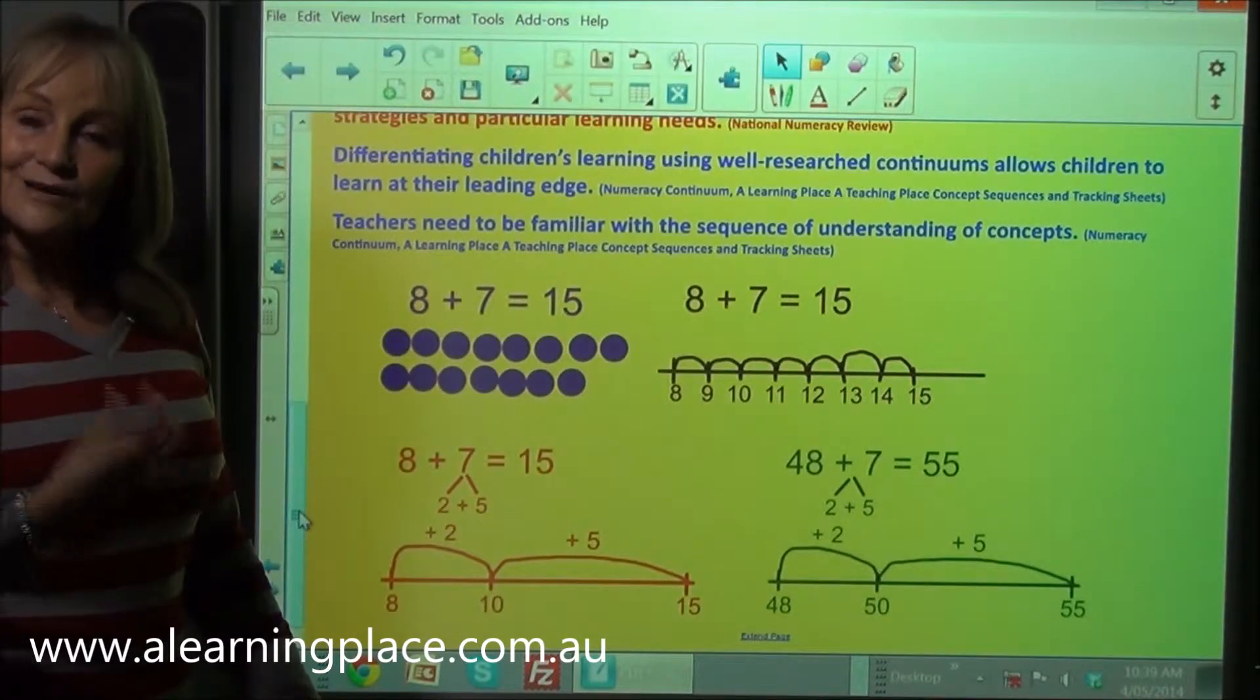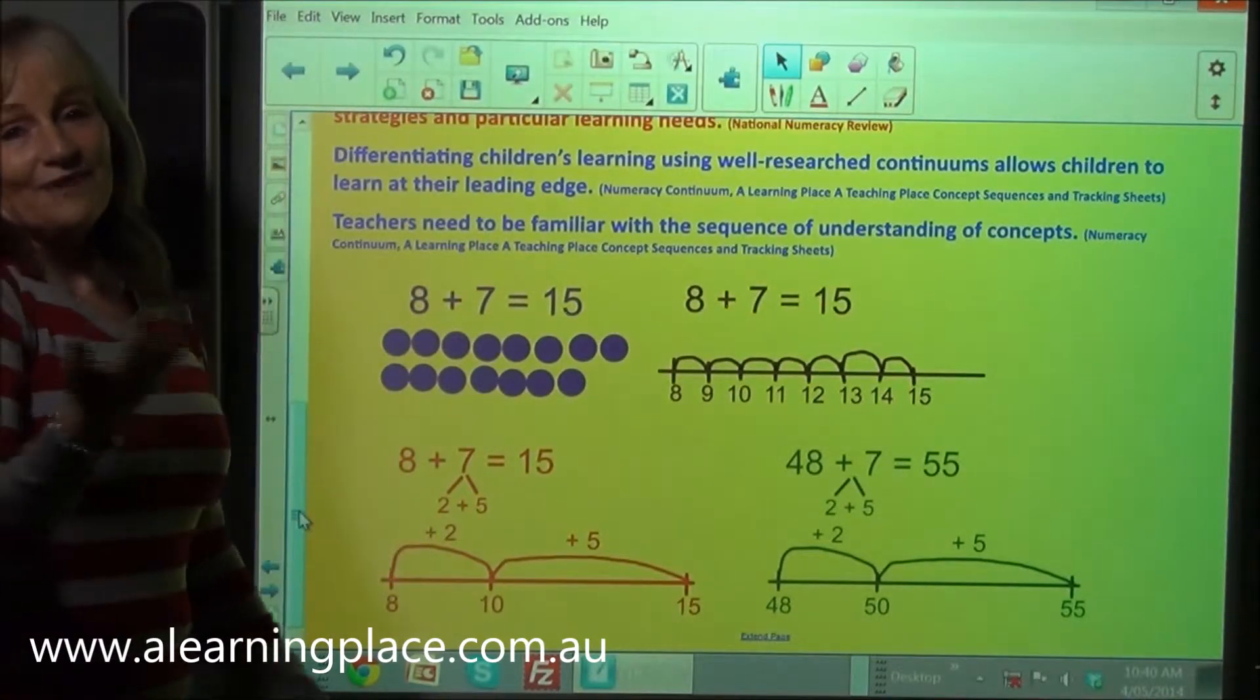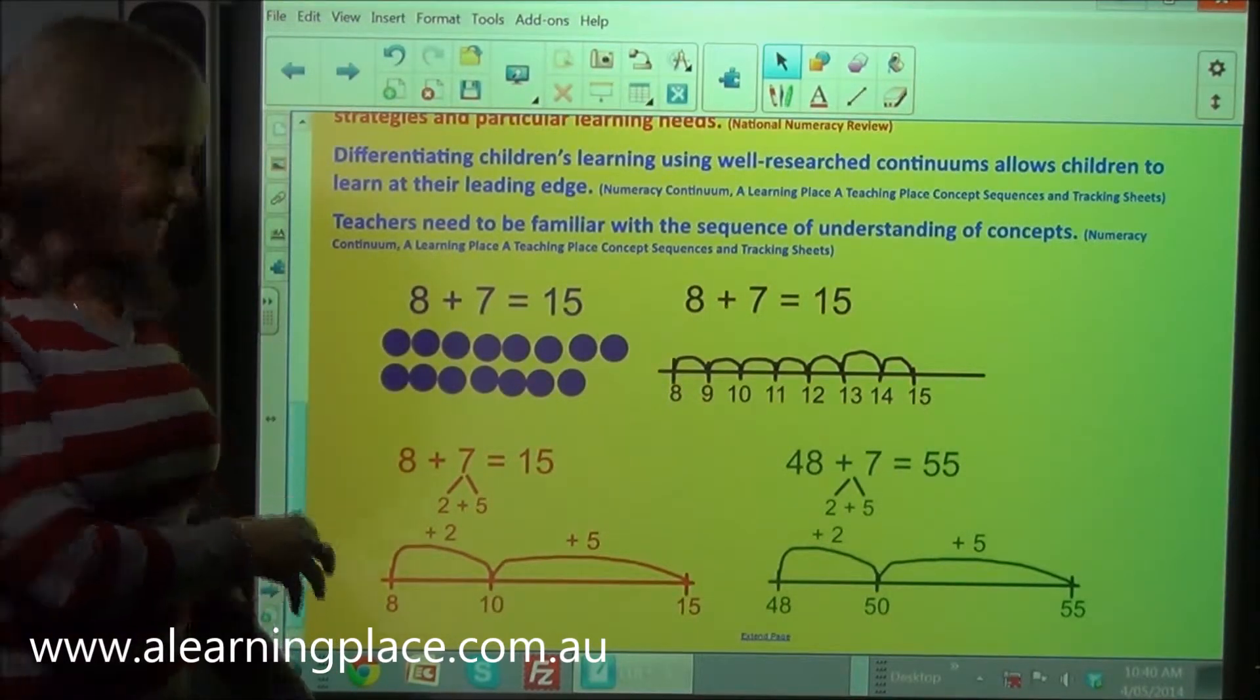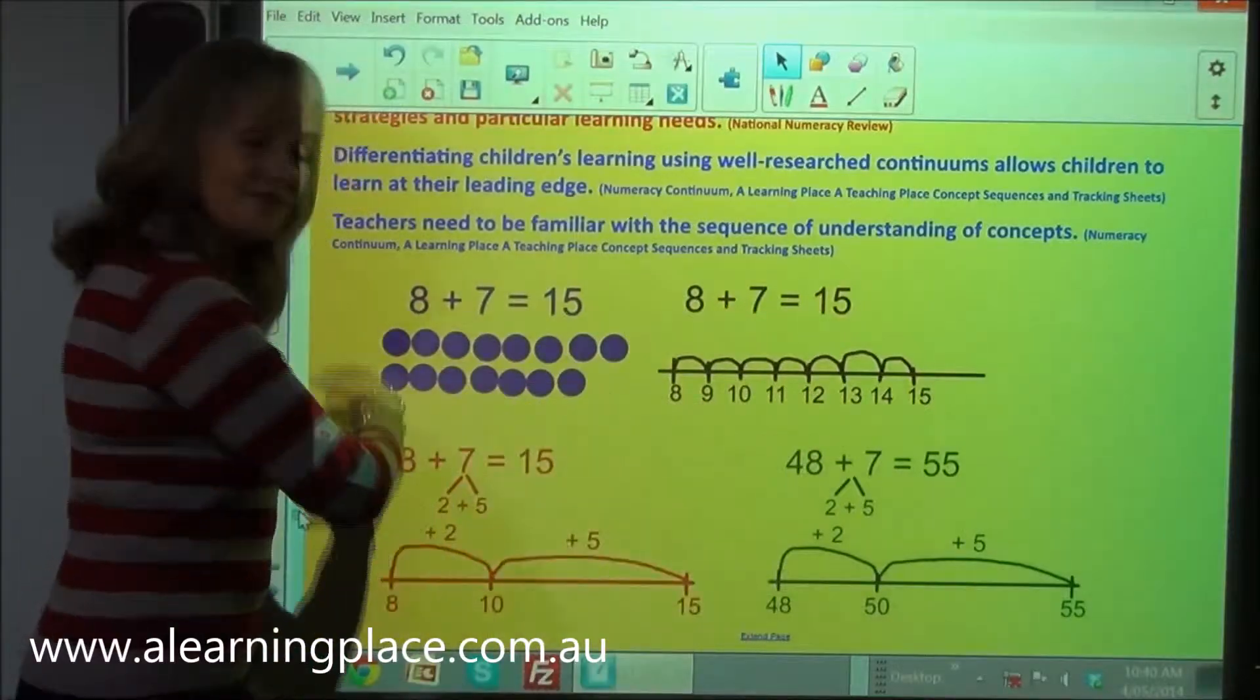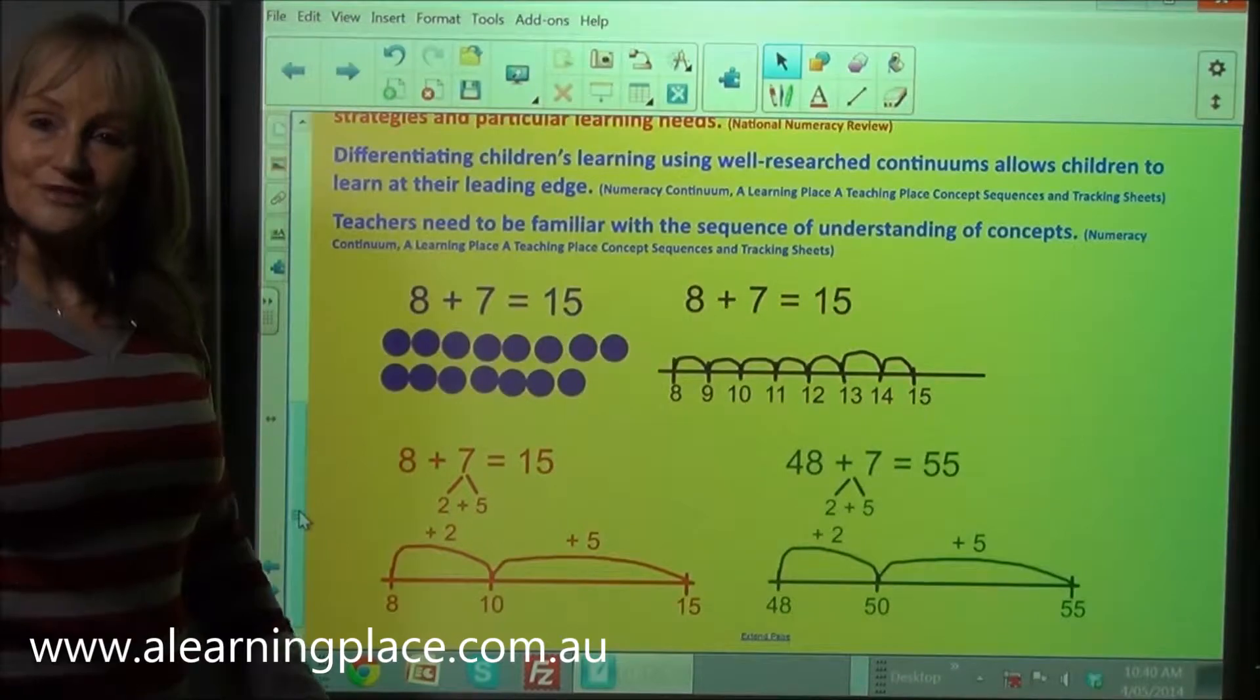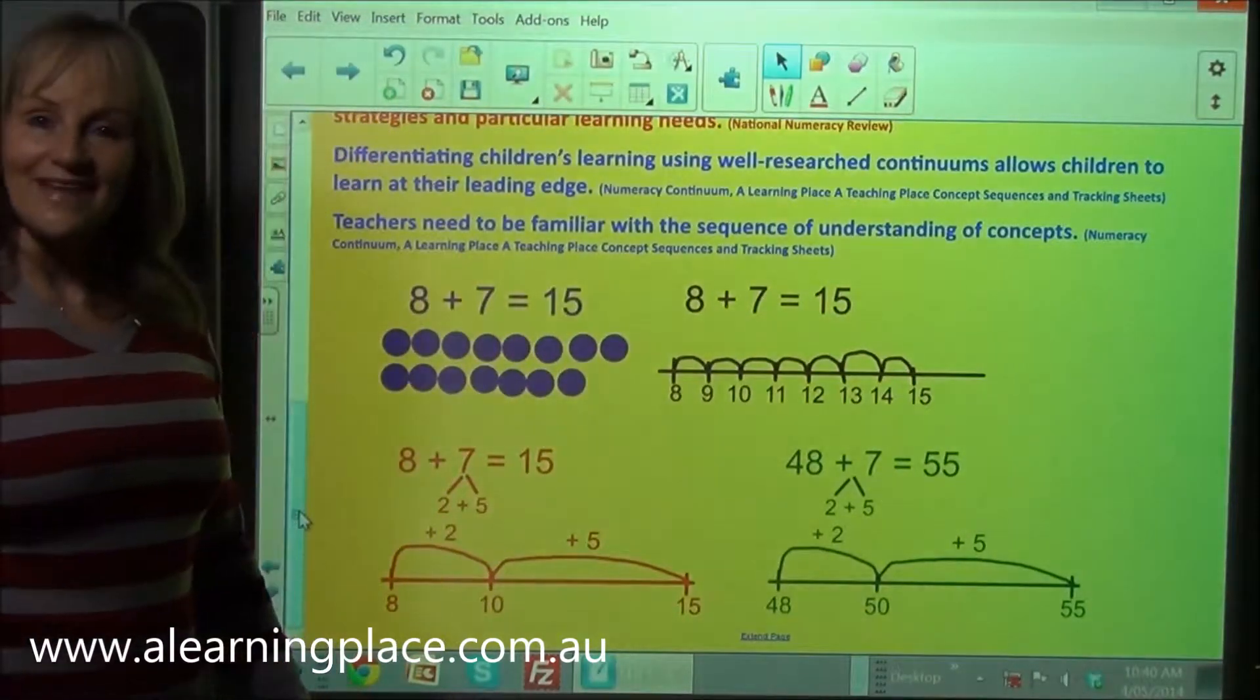Now if you have an interactive whiteboard like this it's really easy because you can just do the different levels in different colors. If you don't you can still do the different levels in different colors but unfortunately you're going to have to rub it off and redo it the next day. This way I can save this, put it up the next day and add some more levels as children move through different levels. I can get rid of this level once no child is working at that level anymore.